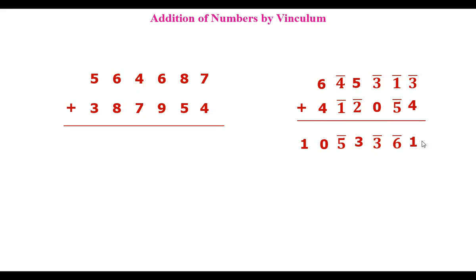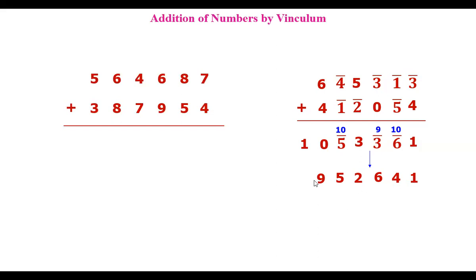Now convert the vinculum sum to decimal. The positive number comes as it is. For the negative numbers: 10 minus 6 is 4; 9 minus 3 is 6; and 3 minus 1 is 2. Eka Nuneena Purvena — less 1. So 3 minus 1 is 2. Then 10 minus 5 is 5; 1 less — 10 minus 1 is 9. Write this number: 952641. That will be the answer to this addition.